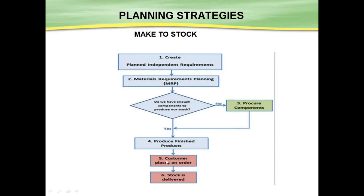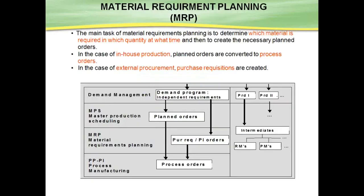After the finished product is produced, the last step is when the customer places an order. This is the basic difference between Make to Order and Make to Stock: in Make to Order, the process starts from the sales order, while in Make to Stock, the process ends on the customer order. In Make to Order the first step is the sales order; in Make to Stock the last step is receiving the sales order and dispatching the quantity to the customer.